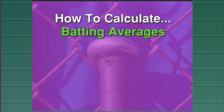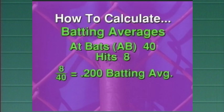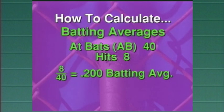To calculate batting averages, this is what you would do. If you had 40 at bats and 8 hits, you would divide the 40 into the 8, giving you the .200 batting average.